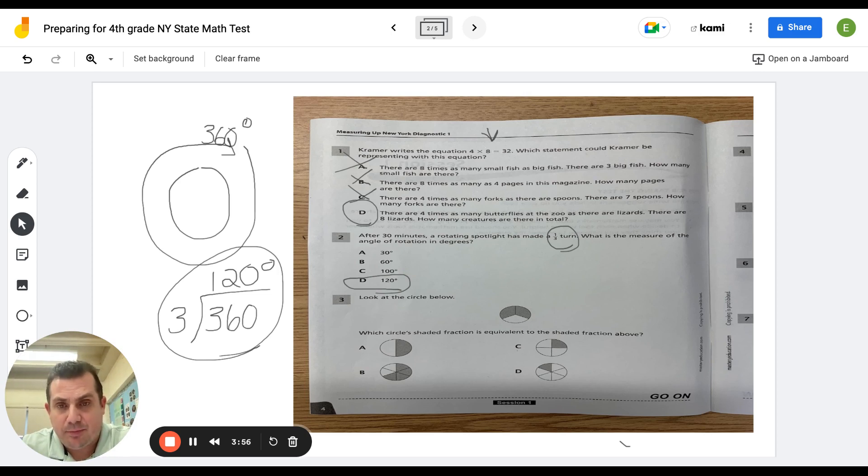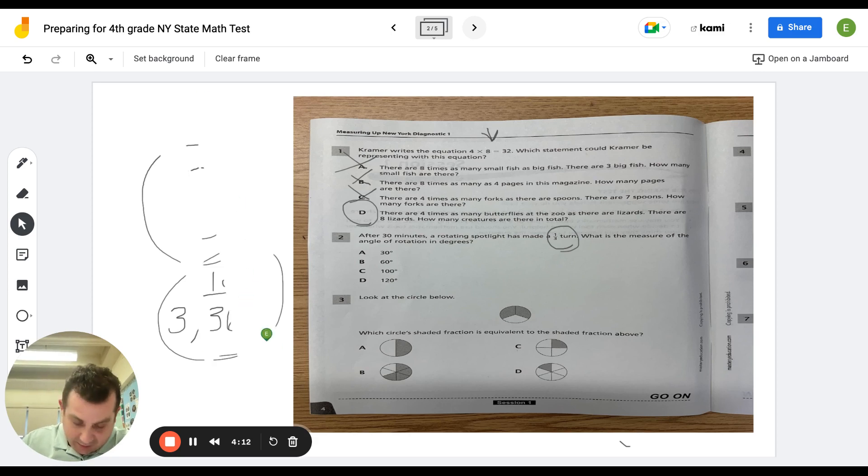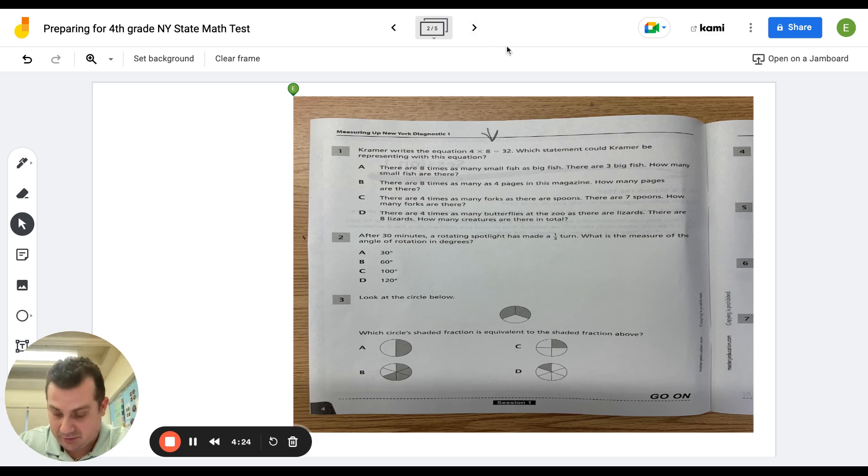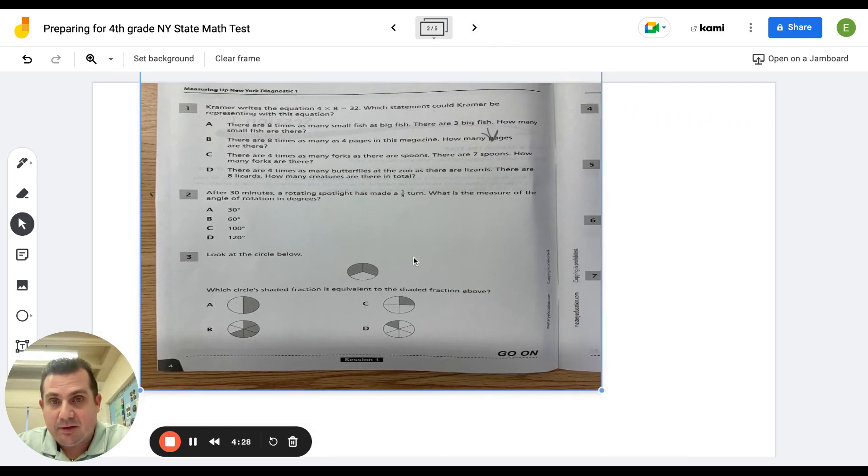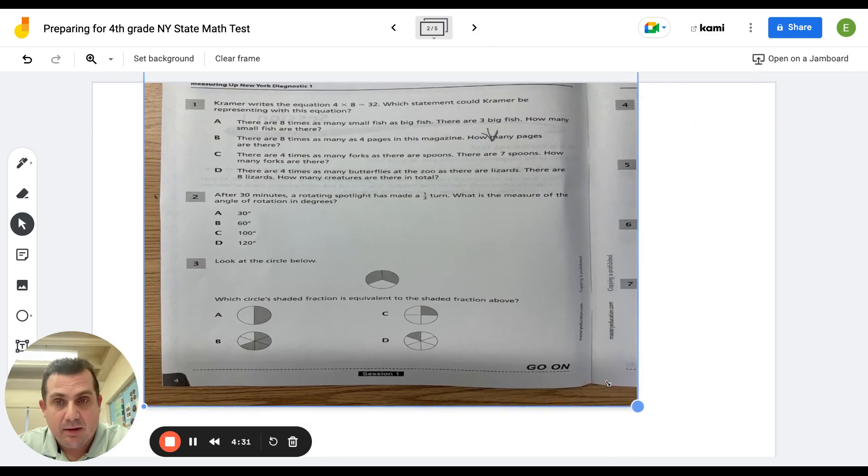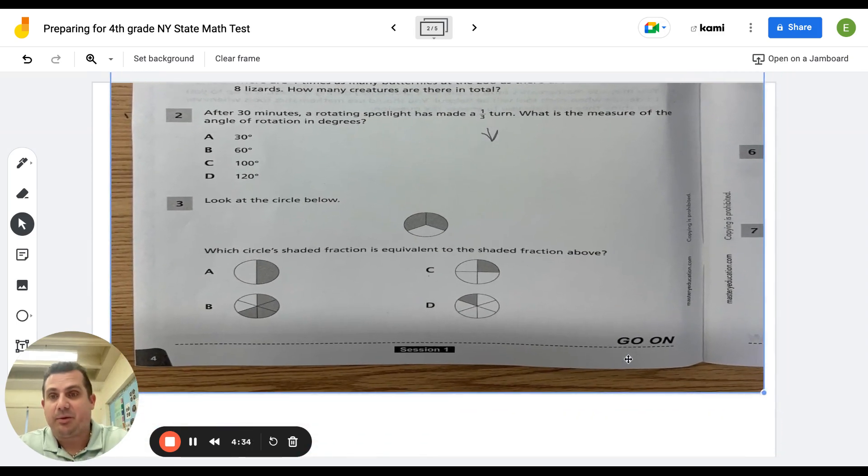Okay. Number three. Which circle, which circle shaded fraction is equivalent to the shaded fraction from above? So I'm going to clear, I'm clearing my board that I have here. I'm going to clear everything. I'm going to see, this should let me, yep, going to make it a little bit bigger. Not sure if you see that. Actually, I got to do it the other way around. I'm going to move this and make it bigger for you to see. There we go. So look at the circle below.